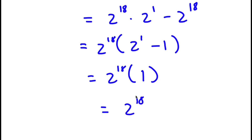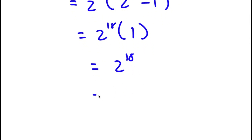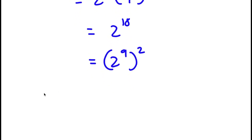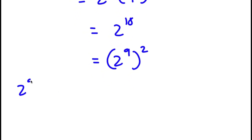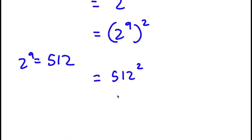So now what I'm going to do is actually simplify this to get the exact value of 2 to the power of 18. So 2 to the power of 18 is the same thing as 2 to the power of 9, to the power of 2. And 2 to the power of 9, as most of you probably know, is 512. So this is the same thing as 512 to the power of 2.